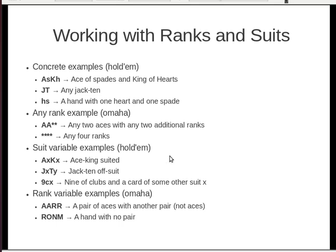Finally, rank variables work on the same idea as suit variables, typically used when you want to indicate whether there are pairs or not. For instance, AA RR is a pair of aces with another pair — R takes on some other rank, so it could be aces and kings, aces and deuces, whatever. Another example: R, O, N, M — four different rank variables — is a hand with no pair in it.